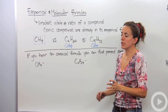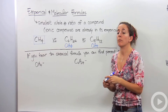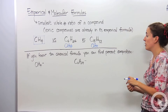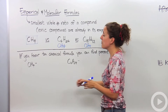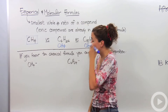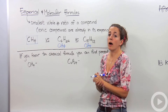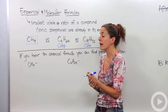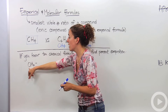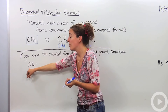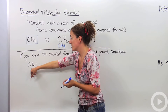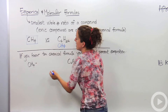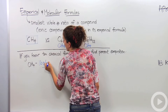Let's go into percent composition, which will help us in determining empirical and molecular formulas. If you know the chemical formula, you can also find the percent composition. Let's take methane, CH4. Percent is part over the whole, so we have to find the mass of the whole thing, then find the mass of each part. The mass of CH4: carbon is 12 grams, hydrogen is 1 gram times 4 is 4 grams, so 12 plus 4 is 16 grams total. This whole compound has a mass of 16 grams per mole.